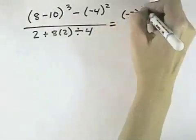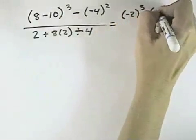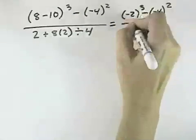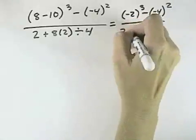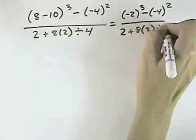8 minus 10 is a negative 2, so we'll have negative 2 to the third power, minus negative 4 to the second power. And in the denominator, we have no parentheses, so we'll leave everything as it is for now.